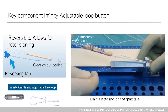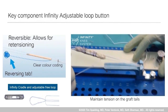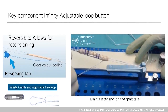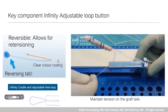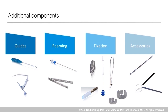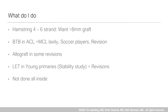One of the key components of the Infinity system is the adjustable loop button, which is reversible. This reversibility allows graft tension to be adjusted, which is important to avoid over-tensioning. For the proximal end there is an infinity cradle that goes with the adjustable free loop, allowing fixation for all-inside techniques. Additional components include guides for the femur and tibia for reaming, fixation with the easy start screw, accessories, and the spade tip drill.